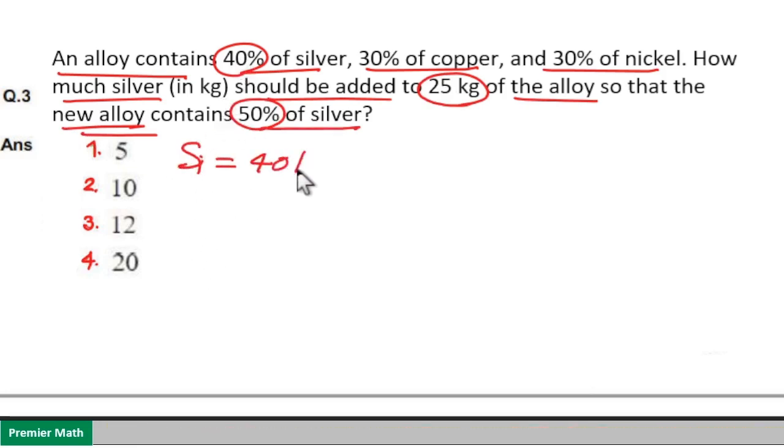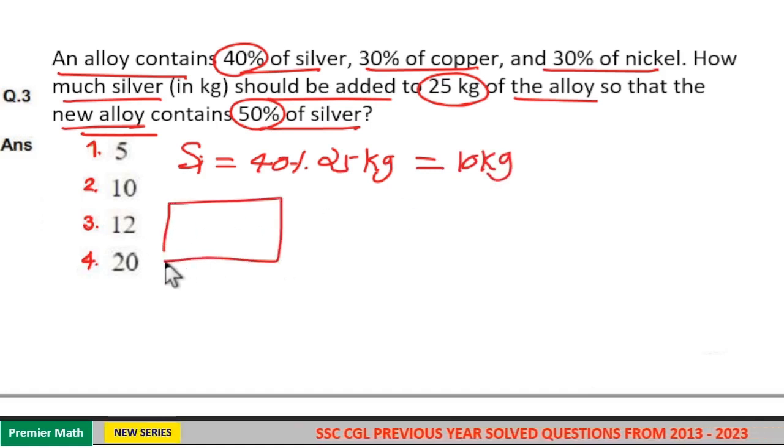is 40%. The total alloy weight is 25 kg, so 10% of 25 is 2.5, and 2.5 times 4 is 40%. Therefore, 2.5 times 4 equals 10 kg. That is, initially this alloy contains 40% silver, which is 10 kg.